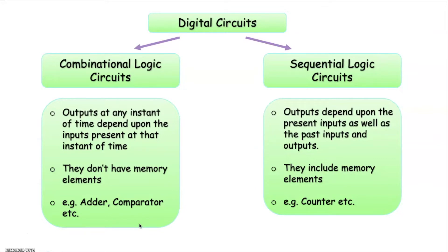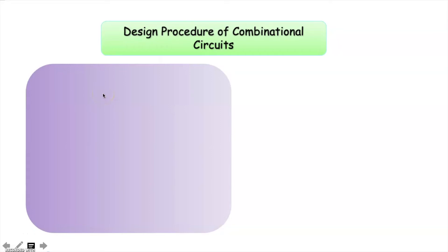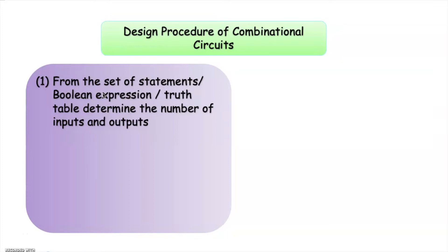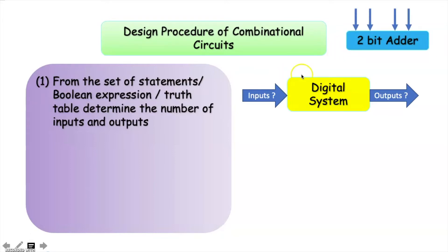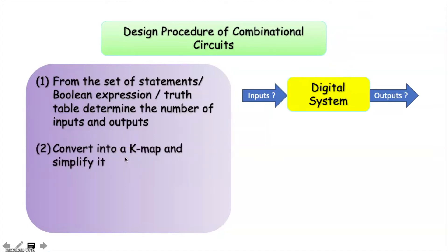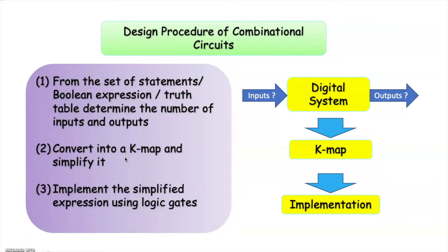Let us discuss the basic steps to design a combinational circuit. The first step is to find out how many inputs and outputs are there in the system. This can be found out from the problem statement — that is, a boolean expression or truth table. For example, to design a 2-bit adder circuit, 4 inputs will be required because for each input number there will be 2 bits. The next step is to convert the truth table into a K-map and simplify it, and the final step is to implement the simplified expression using logic gates.